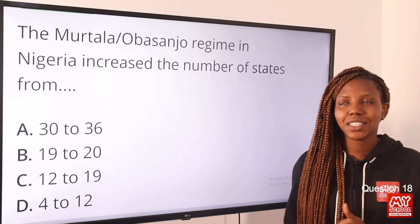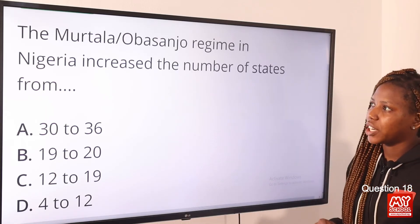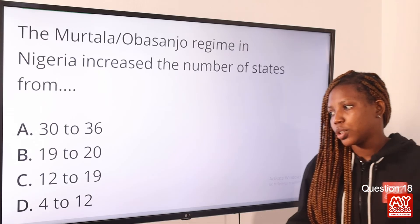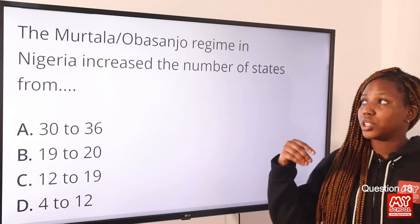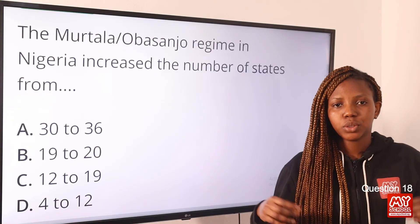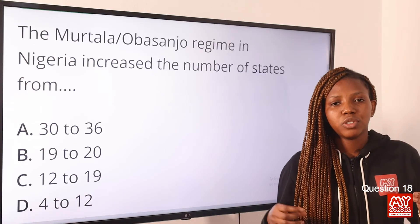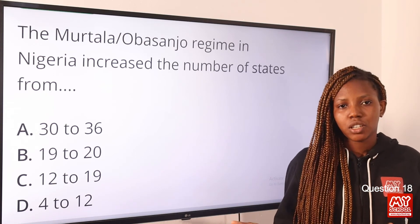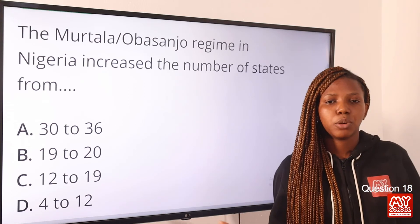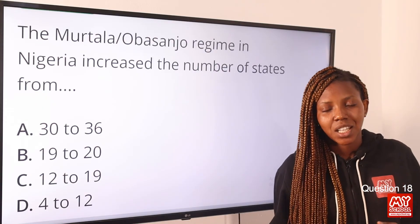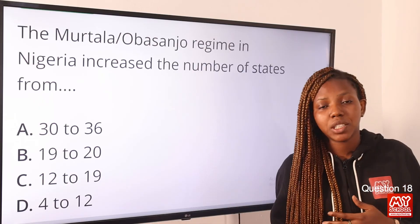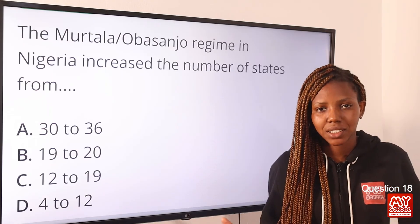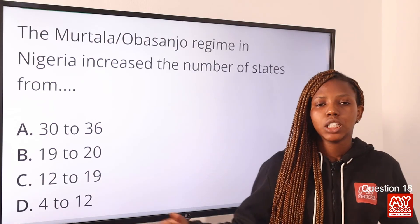Question eighteen: The Murtala/Obasanjo regime in Nigeria increased the number of states from — the answer is option C, 12 to 19. During the Murtala/Obasanjo regime, 12 states already existed from Yakubu Gowon's creation. Murtala added seven more, bringing the total to 19. After Murtala died, Obasanjo came to power and didn't create any states. Later, General Ibrahim Babangida added two more, and General Sani Abacha added the last six.